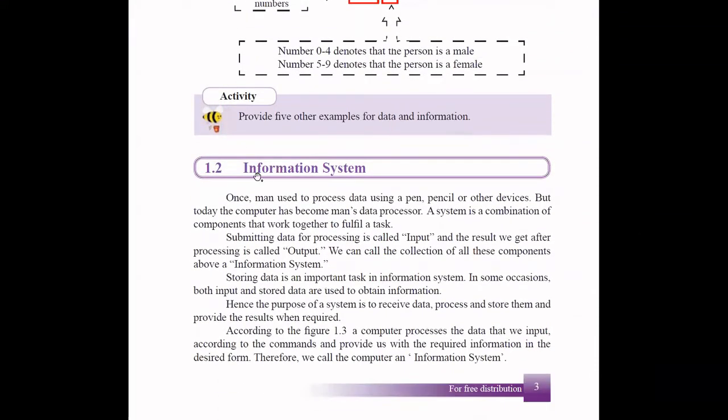Before going into information systems, what do you mean by a system? A system is a combination of components that work together to achieve a task or objective. For example, our body is a system. We have many components like the digestion system that all work together to live a life, to achieve an objective.